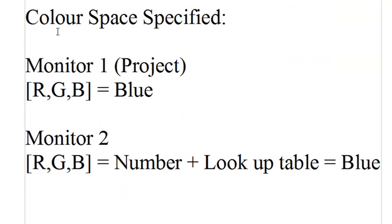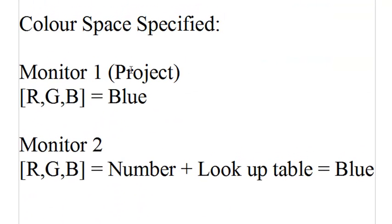So let me show you what that means. Color space specified: monitor one or your project says RGB equals blue. Monitor two receives that same RGB value, plus a lookup table which looks at the color profile it was created in and says — okay, it equals blue. Because we have specified the color space, the lookup table is provided and the monitor can automatically work through the lookup table and say: that in the old profile equals blue, therefore I will make it look the same blue.